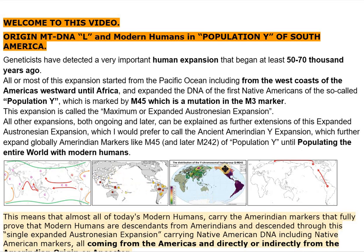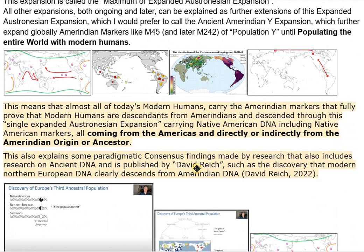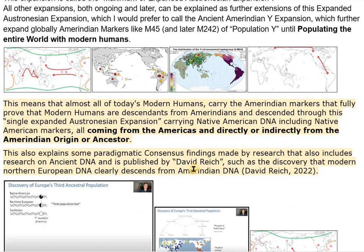All other expansions, both ongoing and later, can be explained as further extensions of this Expanded Austronesian Expansion, which I would prefer to call the Ancient Amerindian Y Expansion, which further expanded globally Amerindian markers like M45, and later M242, of Population Y until populating the entire world with modern humans.